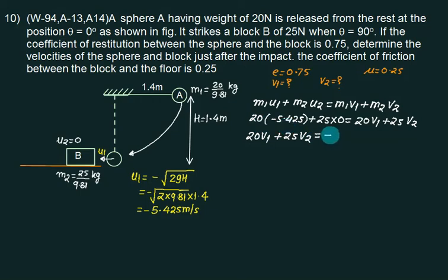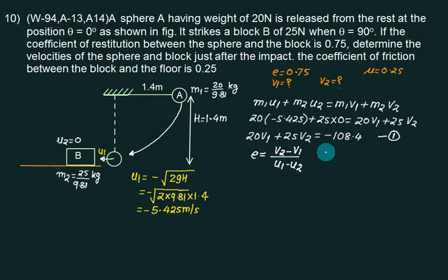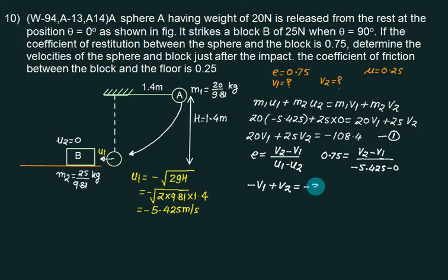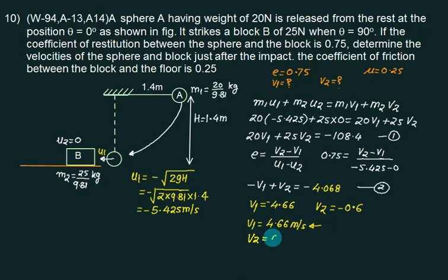Applying coefficient of restitution: e = (v2 - v1)/(u1 - u2), with e = 0.75 and u1 = minus 5.425. Rearranging gives equation two: minus v1 + v2 = minus 3.25. Solving equations one and two simultaneously gives v1 = minus 1.08 m/s and v2 = minus 4.33 m/s — both going to the left, plus magnitude 0.6 m/s for the block.